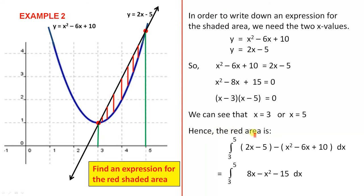Hence, the red area is the integral from 3 to 5 of (2x minus 5) dx minus the integral of (x² minus 6x plus 10) dx. We integrate under the straight line first and take away the integral of the parabola. But to make our work easier, we can subtract these two functions and just end up with the integral from 3 to 5 of (8x minus x² minus 15) dx, which is exactly the same. That will give us the shaded area.